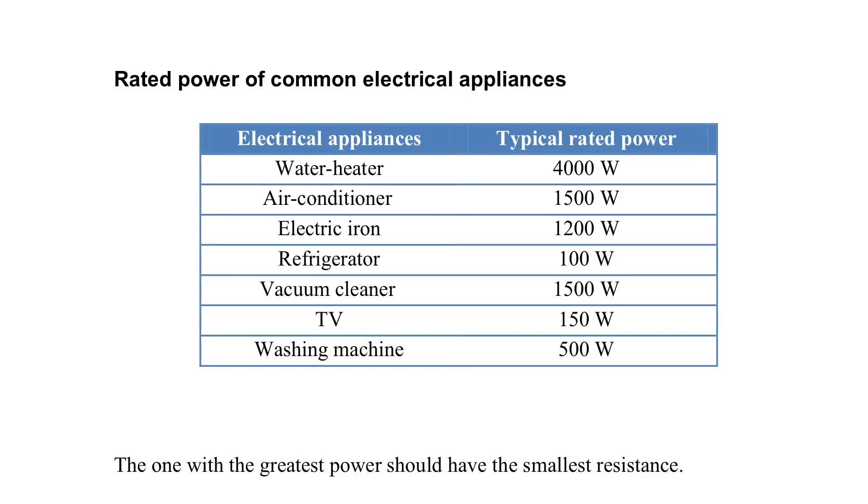Let's compare electrical appliances with different rated power. Since they are electrical appliances which work in the household area, their rated voltage is the same. For example, 220V in a normal Hong Kong household.